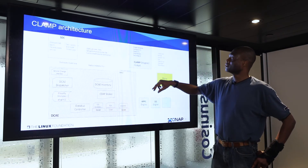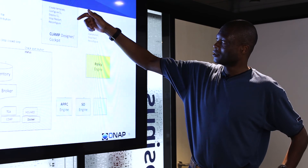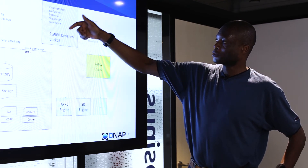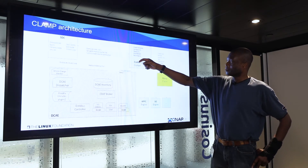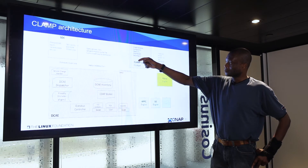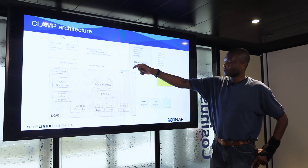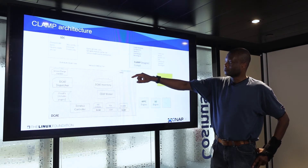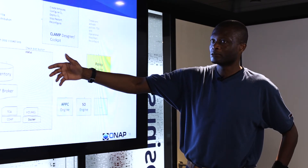Then after that, when the operator is ready, it will first query DCAE to check that the blueprint is well into the DCAE inventory. When that is the case, it will then trigger the start or deployment of that template to DCAE. That will be the starting point for the actual runtime of the control loop.